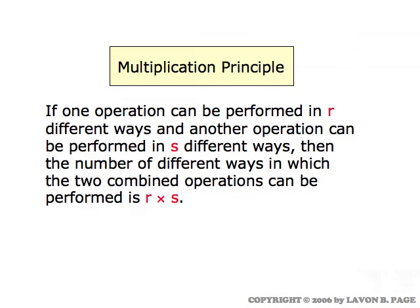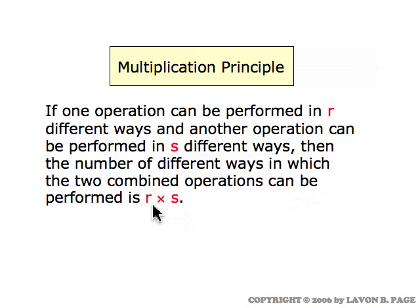This is the essence of the multiplication principle. If one operation can be performed in R ways and another can be performed in S ways, then the number of ways in which the two combined operations can be performed is obtained by simply multiplying those two numbers together — the number of ways of doing the first thing times the number of ways of doing the second thing.